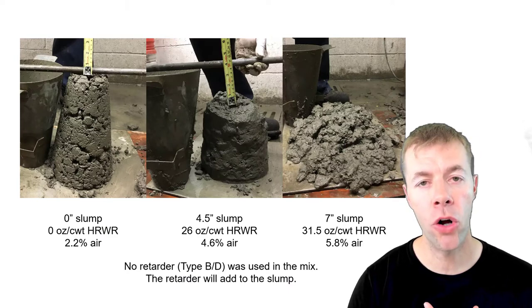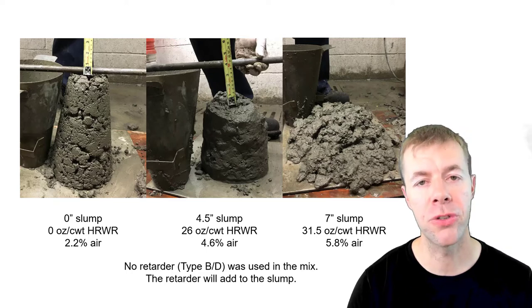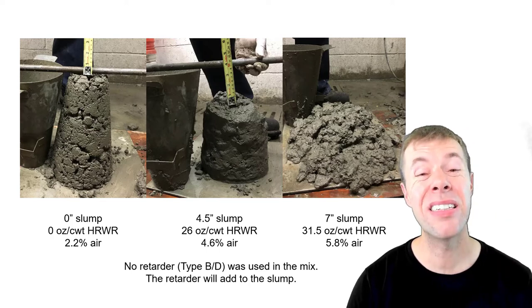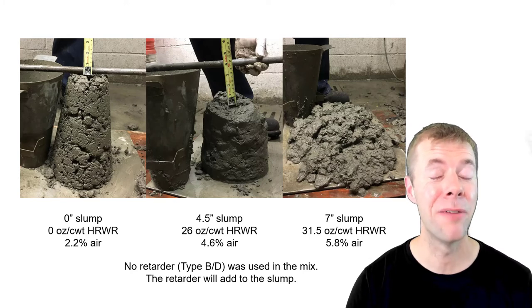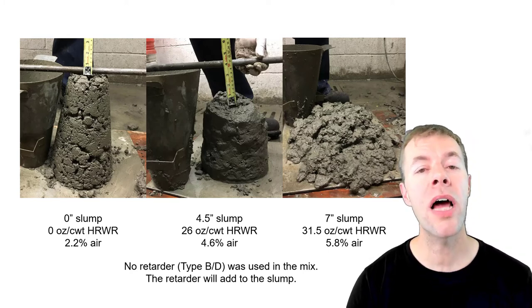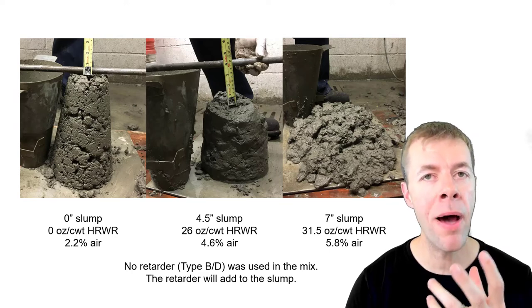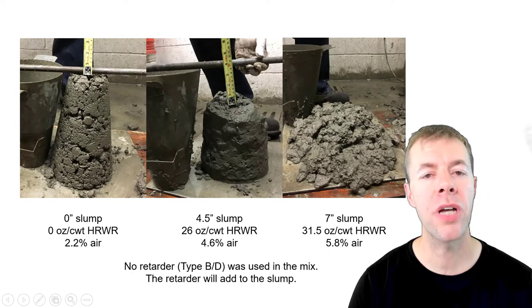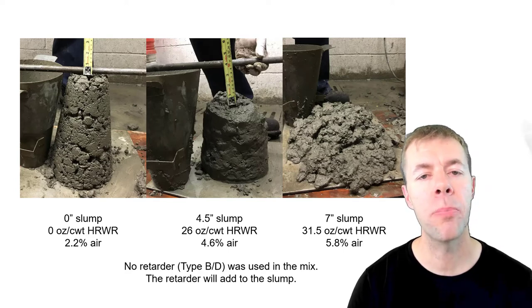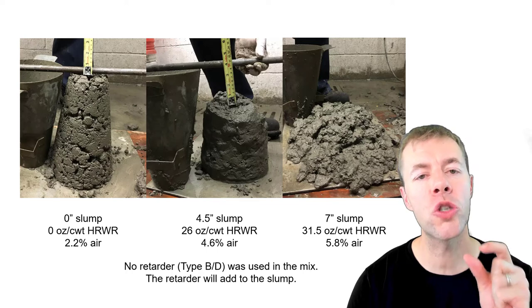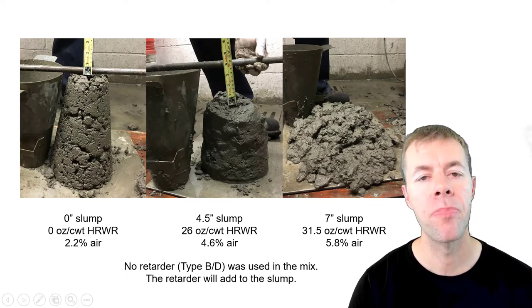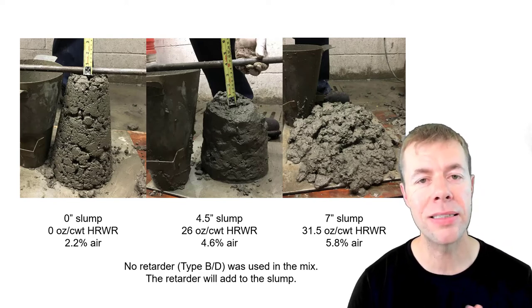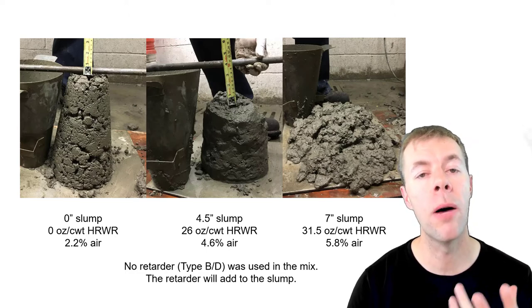One thing I love to do when I trial batch concrete is to do it first with no admixtures, because I want to see what my slump is from just water. I noticed that I had a zero slump — I usually like a little bit higher than that, but that's what they had. So we started adding water reducer, using the exact same amount they used in their mixture, and we got a four-and-a-half inch slump at 4.6% air. They added super plasticizer and slump went up. We added a little bit more — just a splash — and we ended up getting a seven inch slump. There was no retarder in these trial batches; if we had a type B/D retarder, we would expect slump to go up even more.